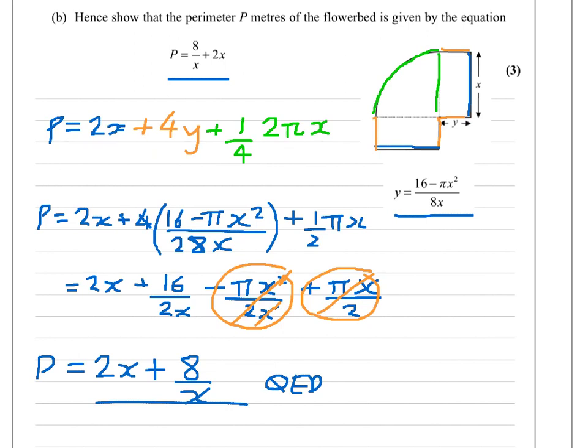Only three marks. The method mark for taking the perimeter, the accuracy mark for doing it correctly, and then the final accuracy mark. But they did give you... It was a show, that question. So, you need to make sure the working is clearly there.